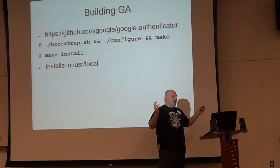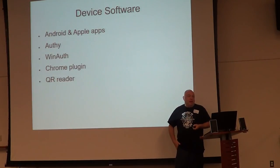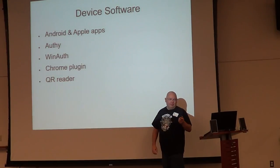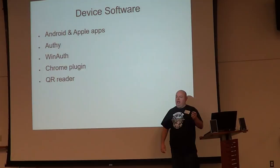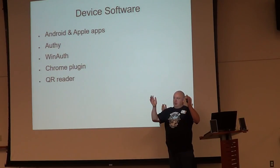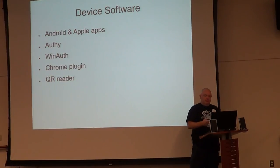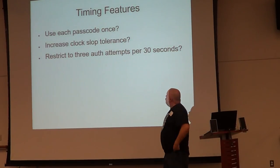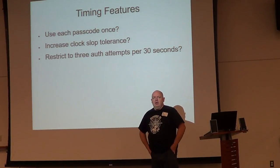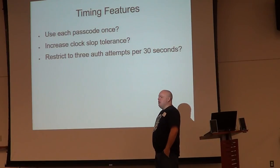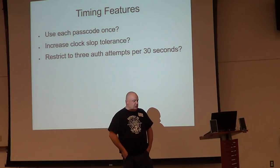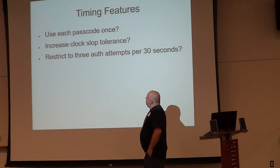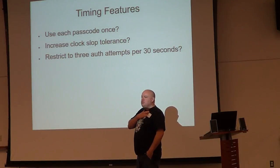So this should be familiar to all of you: grab the code, bootstrap, configure, make, install your client program. And you want something with a QR code reader, or something running locally on the same screen so you can copy and paste the really long code. You have some decisions to make. Your timing features — do you want to use each passcode once and only once? This RFC gives you a new code every 30 seconds. If you can use each password once and only once, you're limited to one authentication every 30 seconds.